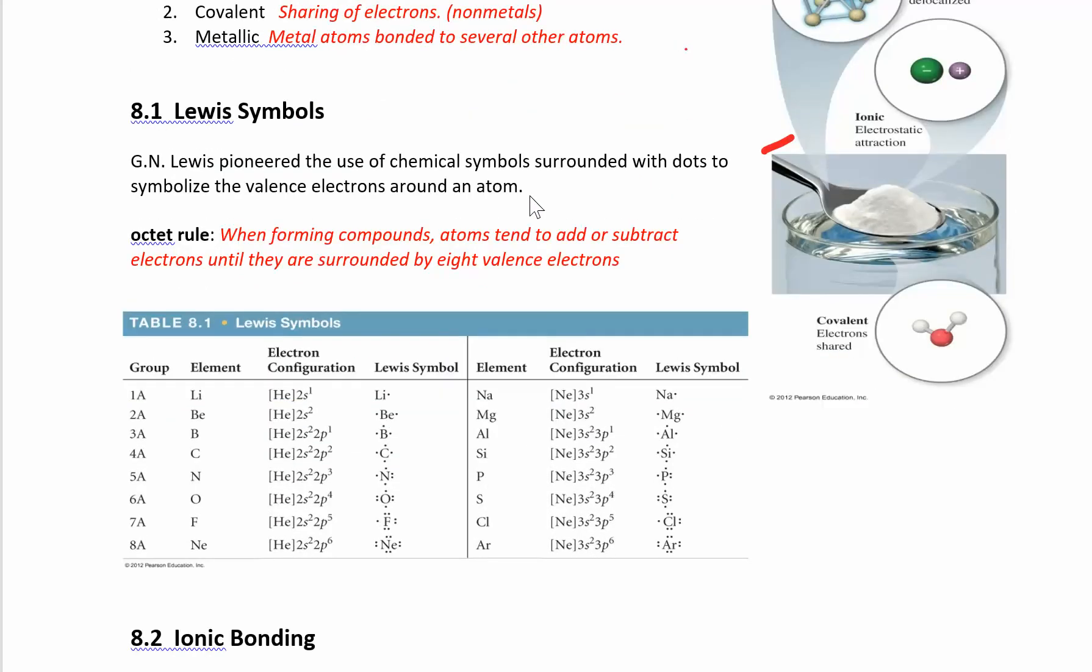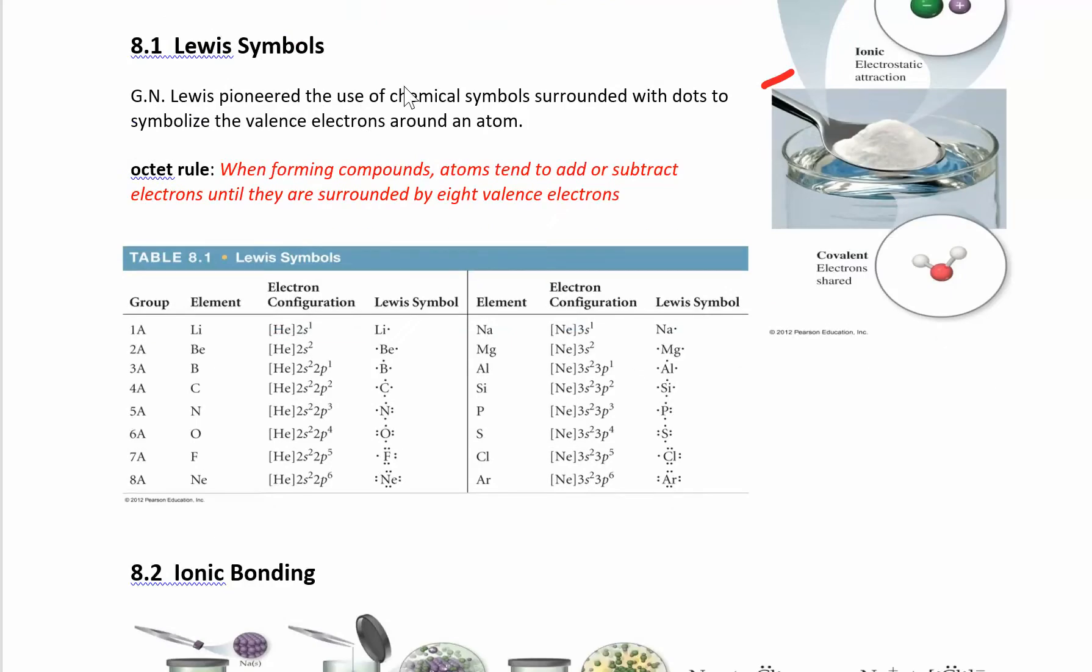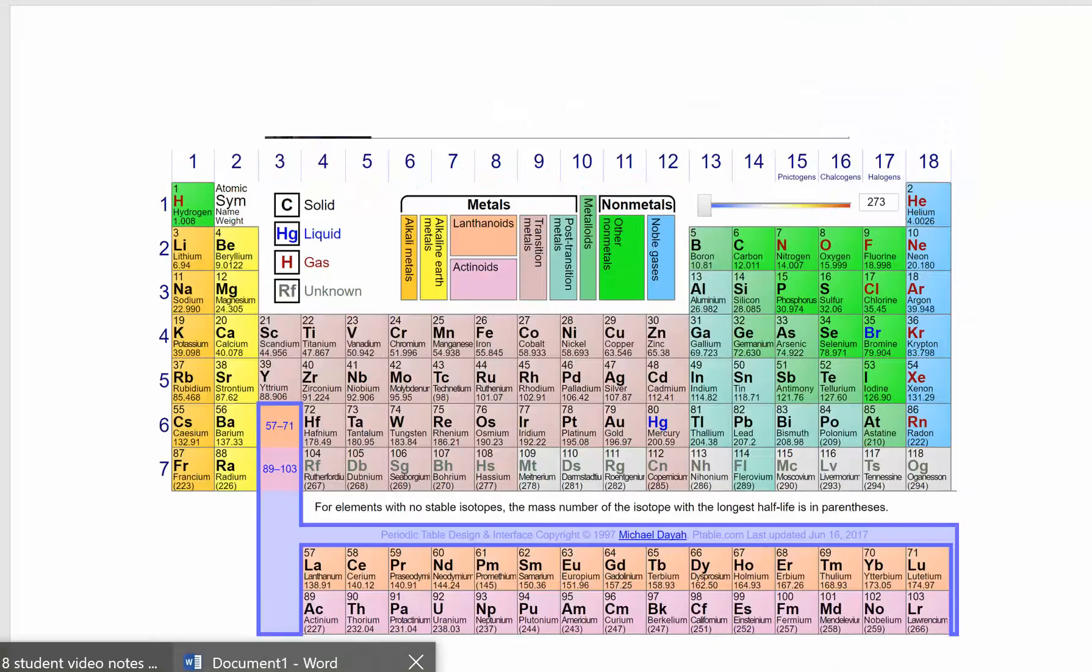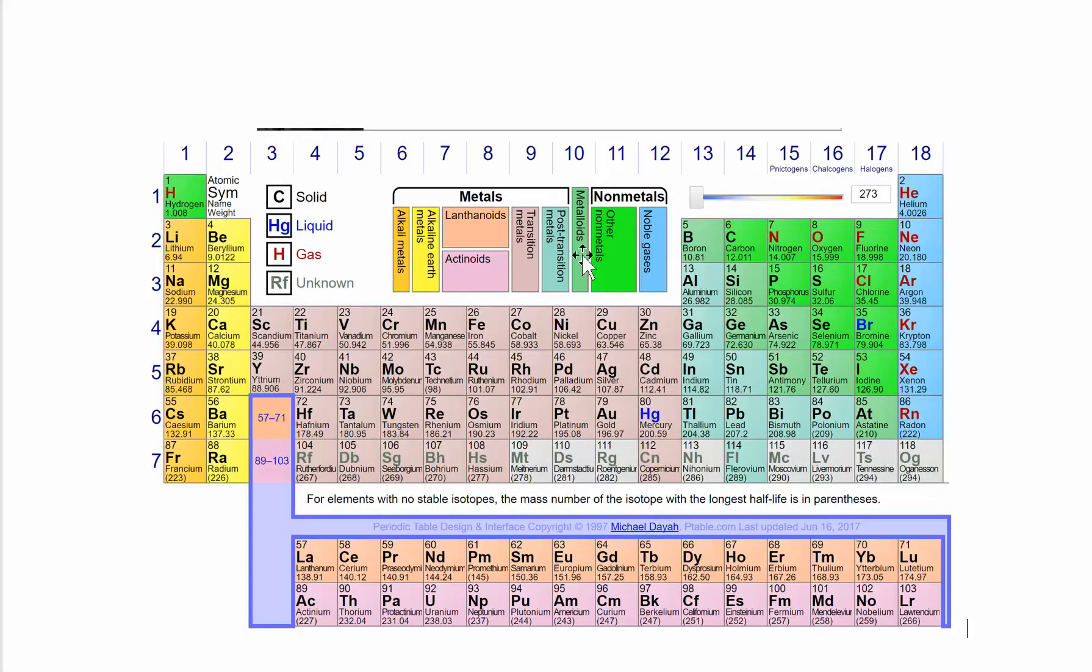So now we can look at some Lewis structures, which are just a way to represent how many valence electrons any given element has. We can review briefly how to figure out how many valence electrons things have. Everything in group one has one valence electron. Everything in group two has two valence electrons. Then skip the transition metals. From boron down, these guys have three, four, five, six, seven, and eight valence electrons. Depending on what family it's in, that will tell you how many valence electrons that element will have.